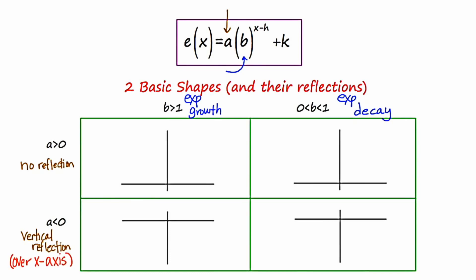Let's show what each of these four outcomes looks like. Starting with the top left, we have exponential growth with no reflection. One observation: when we start this graph over the left, it exhibits asymptotic behavior — the graph approaches but never touches y equals zero, or the x-axis. I'm going to make hash marks through the axis to show there's an asymptote there. Moving to the top right, we have the exponential decay graph with no reflection, and once again the x-axis serves as an asymptote.